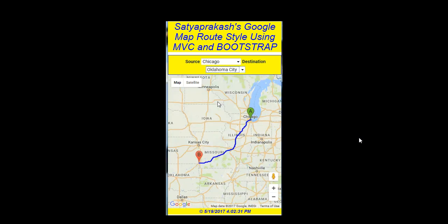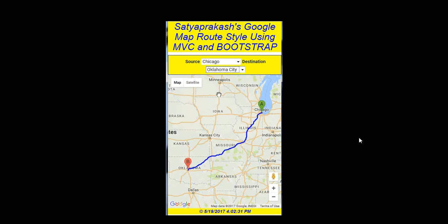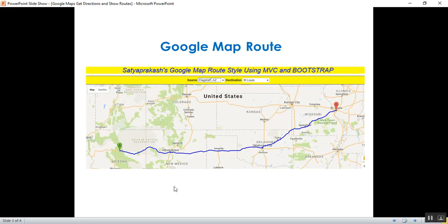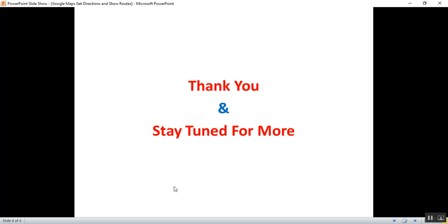In this way we can configure route style and get directions and show routes between two places — from source to destination. We can also customize the route color from the default Google Maps color to our own color. That's it for today, thank you for listening, have a great day.